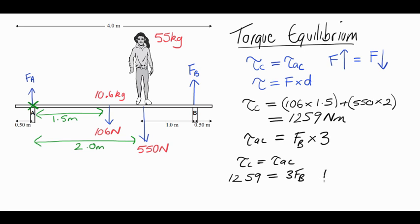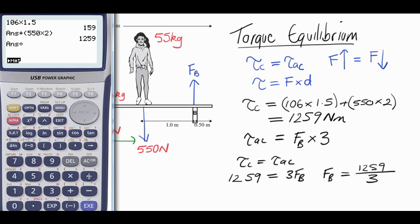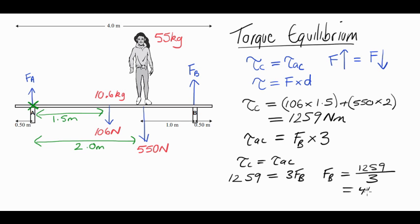If we rearrange this force B will be equal to 1259 divided by 3. So we come back here and we divide our last answer by 3. And we're going to get 419.67 newtons. To keep it consistent with the rounding in the problem, 2 significant figures. So 420 newtons. Okay, so we're halfway there. At this point, if you were able to work out force B, then you've probably got yourself a merit. Force B is 420 newtons.